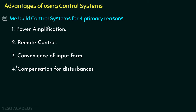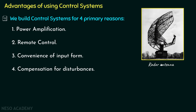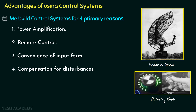Suppose we have a radar antenna and we wish to rotate it through a certain angle. We use a rotating knob and rotate it through that angle, and the radar antenna rotates through the same angle. However, the power required to rotate the knob is quite small compared to the power required to rotate the heavy antenna. So we need to amplify the power, and we use motors for that purpose — motors are control systems. This is why we need control systems for power amplification.